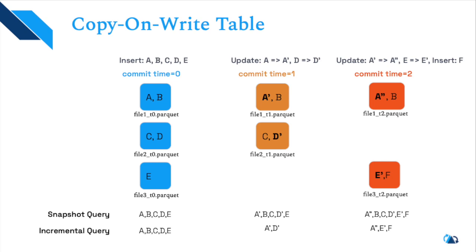At time T2, A is updated to A'', E is updated to E', and a new record F is inserted. A snapshot query now returns A'', B, C, D', E', and F. An incremental query shows only A'', E', and F — the changed data. So snapshot queries always give you the latest state of your data, while incremental queries let you build incremental pipelines to power downstream applications by processing only changed data.